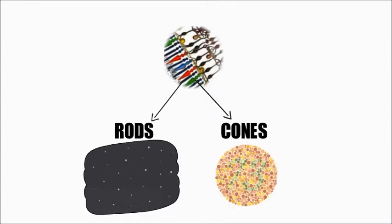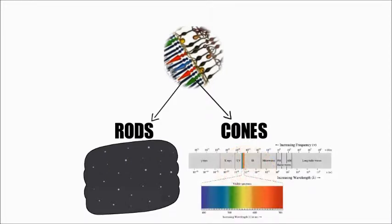Cones are color-sensitive cells that detect particular ranges of color, depending on the species.